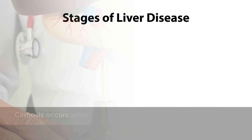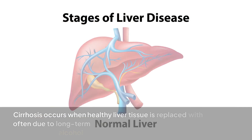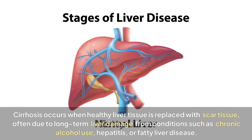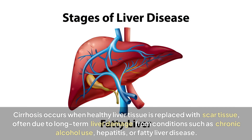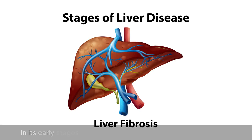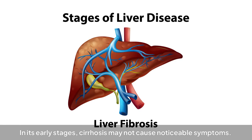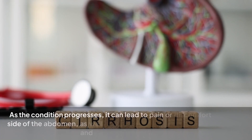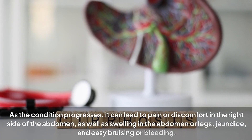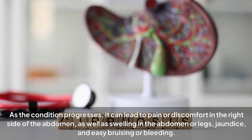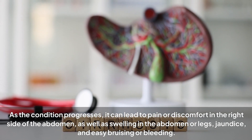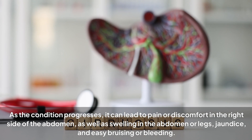Fourth, cirrhosis. Cirrhosis occurs when healthy liver tissue is replaced with scar tissue, often due to long-term liver damage from conditions such as chronic alcohol use, hepatitis, or fatty liver disease. In its early stages, cirrhosis may not cause noticeable symptoms. As the condition progresses, it can lead to pain or discomfort in the right side of the abdomen, as well as swelling in the abdomen or legs, jaundice, and easy bruising or bleeding.